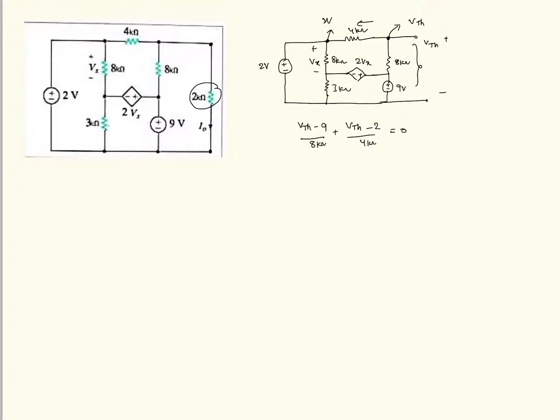So by solving this simple equation Vth minus 9 plus 2 Vth minus 4 equals to 0. So it is 3 Vth is equals to 13 Vth is 13 by 3 volts. So here we got our first answer Vth. Thevenin's voltage is 13 by 3 volts.